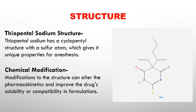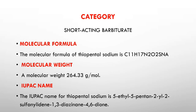Now we will see the structure of thiopental sodium drug. Thiopental sodium has a cyclic structure with a sulfur atom, which gives it unique properties for anesthesia. Thiopental sodium belongs to the class barbiturates, from the category short-acting barbiturates. You can see the molecular formula, molecular weight, and the IUPAC name of the thiopental drug on this slide.